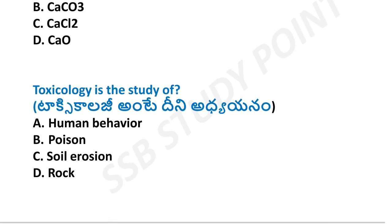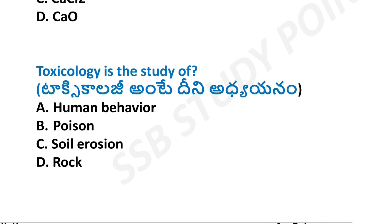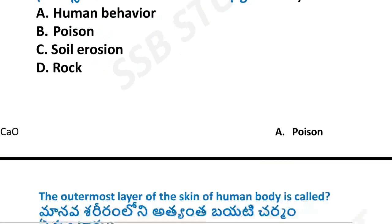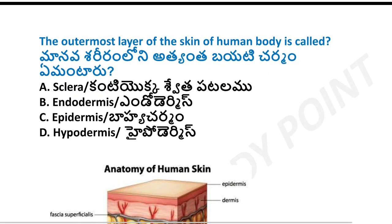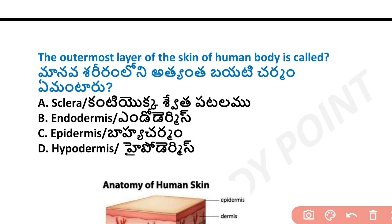Next question: what is toxicology? Toxicology is the study of poisons. The word toxic relates to poison, and toxicology is the branch of science that studies poisons. Next, the outer layer of the skin of the human body.